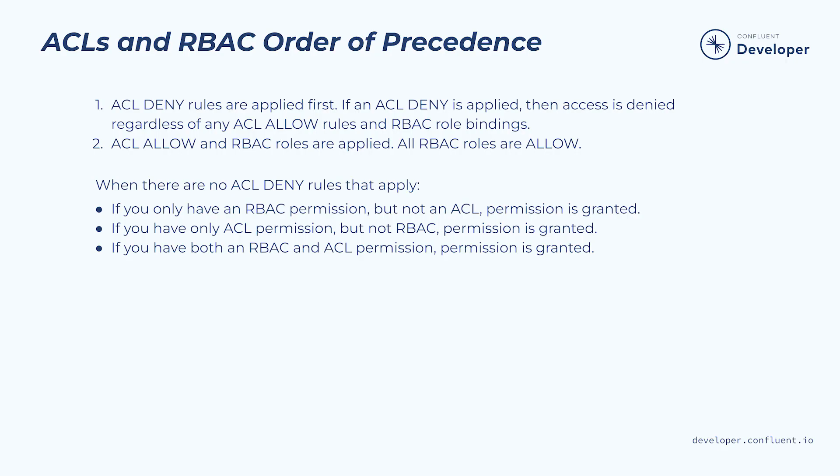Some of you may be asking: can I use ACLs with RBAC? Yes — there are times when you may need to provide a small set of identities with access to a resource in your Confluent Cloud cluster. However, as an investment in the future, we recommend going with RBAC over ACLs. As both RBAC and ACLs provide authorization, there is an order of precedence in granting access. This screen is taken directly from the Confluent Cloud documentation and I recommend referencing it as you create your ACL deny and allow rules.